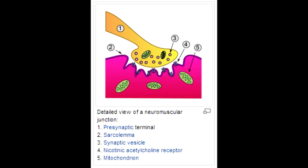The phase 1 block of succinylcholine is the prolonged depolarization phase. There is no antidote for this. Phase 1 block can be potentiated by cholinesterase inhibitors.